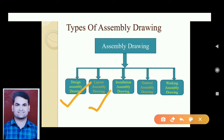The third type is an installation assembly drawing. An installation assembly drawing shows the installed position of a part relative to its supporting structure or associated components.